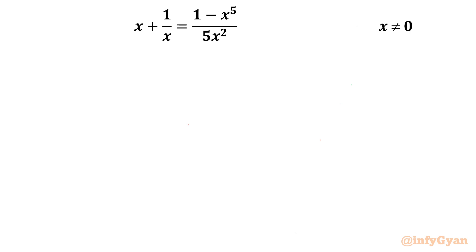Welcome back to Infigyan, my dear friends. In this video we are going to take up one very interesting mathematical challenging problem on equation solving. The given equation is x plus 1 over x equals 1 minus x to the power 5 over 5x squared, where x is non-zero and x belongs to real numbers. We have to find out the solutions.